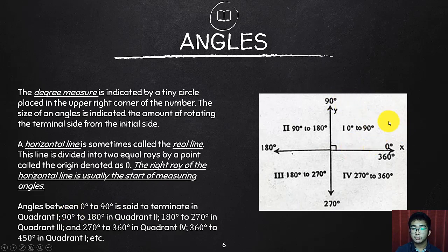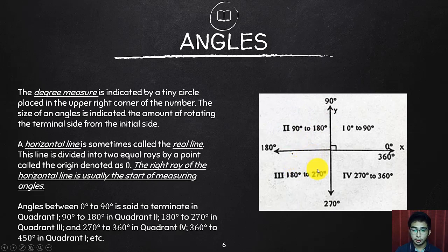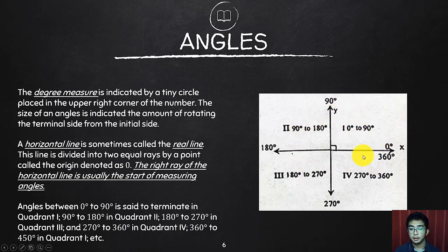On the positive x-axis we have 0 degrees, positive y is 90 degrees, negative x is 180 degrees, and negative y is 270 degrees. If the angle falls between 0 to 90 degrees, it is in the first quadrant. Between 90 to 180 is the second quadrant, 180 to 270 is the third quadrant, and 270 to 360 falls on the fourth quadrant. Beyond 360 degrees you return to the starting point, but usually rotation only considers up to 360 degrees for simplicity.